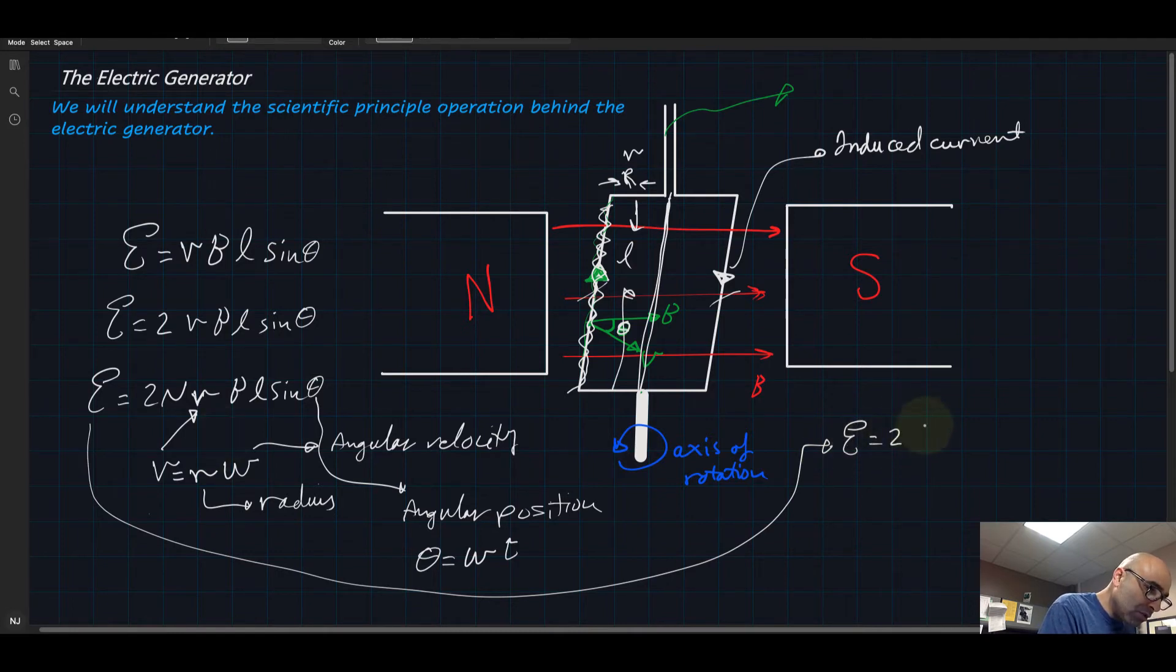So let me rewrite this equation here again. So E is equal to 2N times V, which I said is equal to r times omega, which is the angular velocity, times B times L times sine omega t. It's getting a little bit complicated but we can make it simpler.